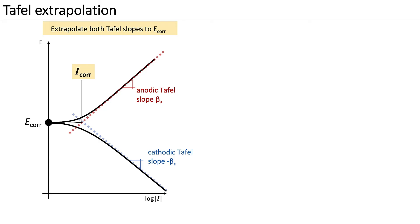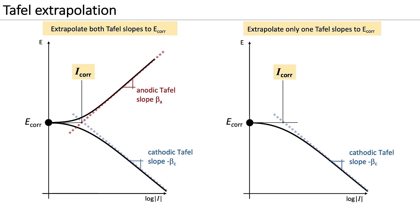Generally, both branches are used for this extrapolation. However, it's also possible to only measure and extrapolate one Tafel slope to the corrosion potential, as shown on the right. Often the cathodic branch is used, as it tends to produce a longer and better defined linear Tafel region than the anodic branch.